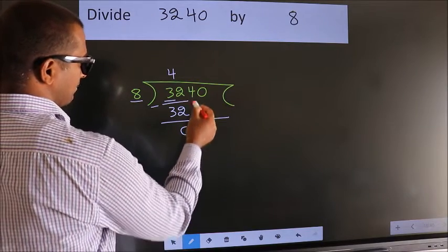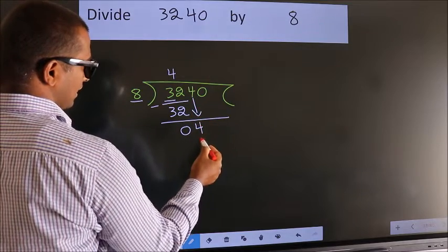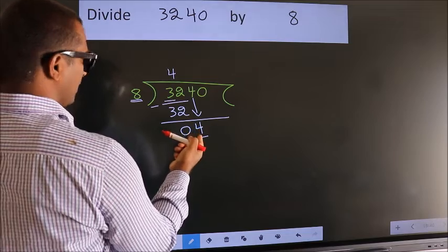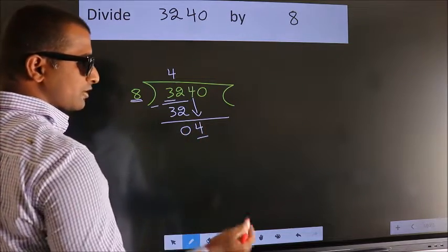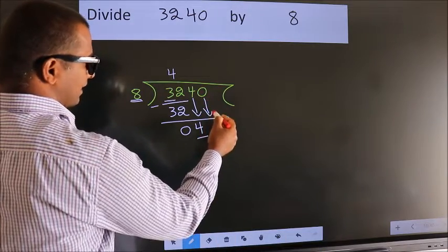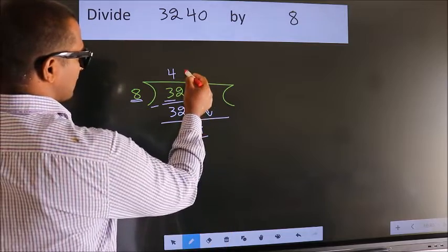After this, bring down the beside number, so 4 down. Here we have 4. Here 8. 4 is smaller than 8, so we should bring down the second number. And the rule to bring down the second number is put 0 here.